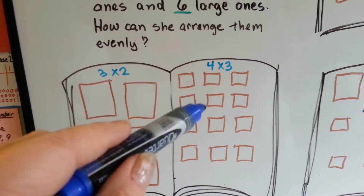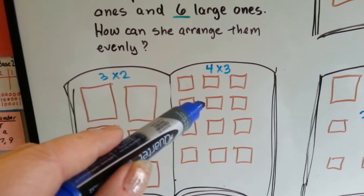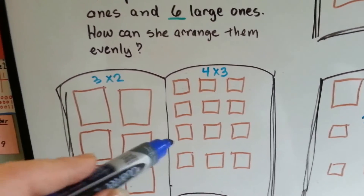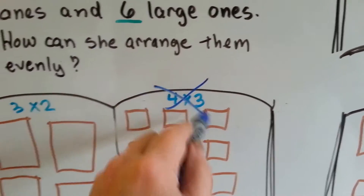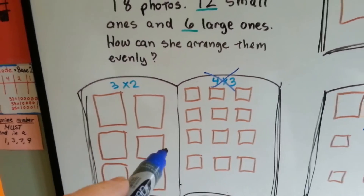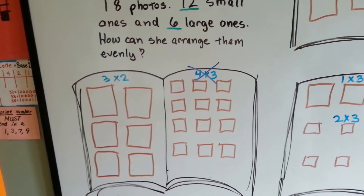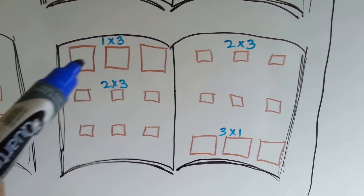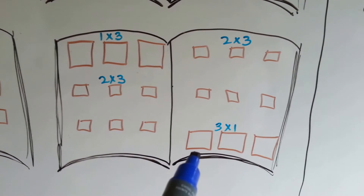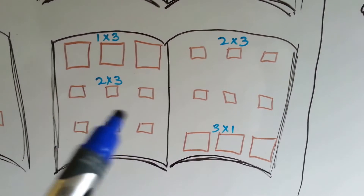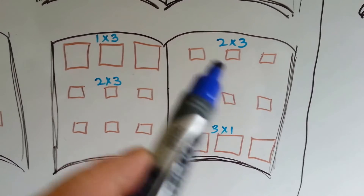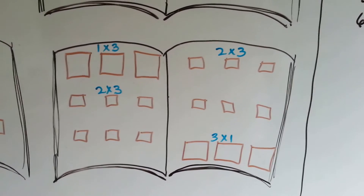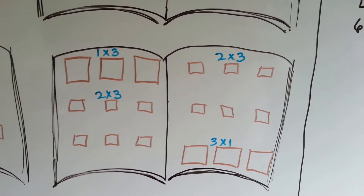But 4 is not a common factor between 6 and 12, so that arrangement wouldn't work. She wants to use common factors. What if she put 3 big ones up top and 3 big ones below, and then 2 rows of 3 on one page and 2 rows of 3 on the other? That would work — those are all common factors of 12 and 6: 1, 2, and 3.